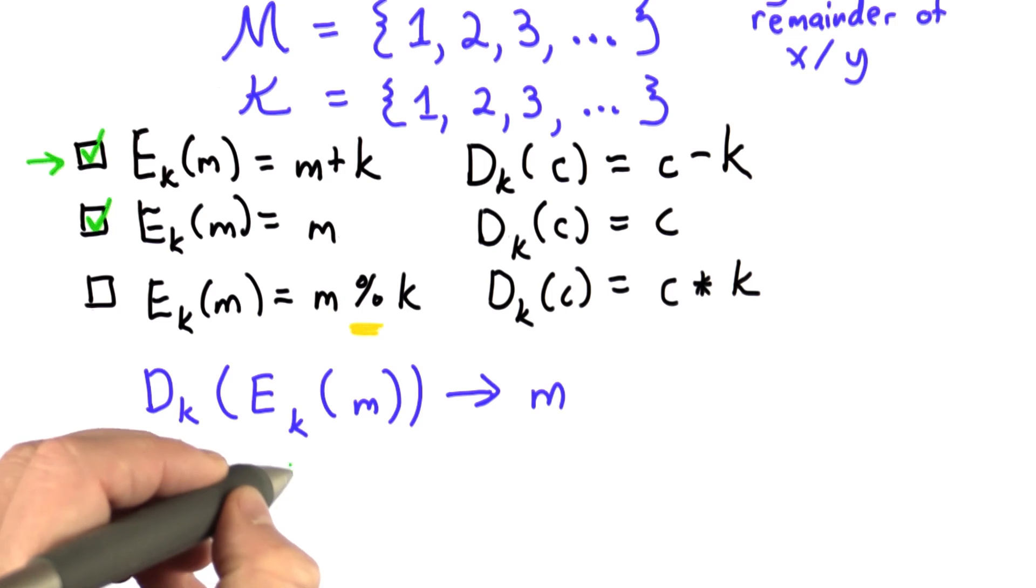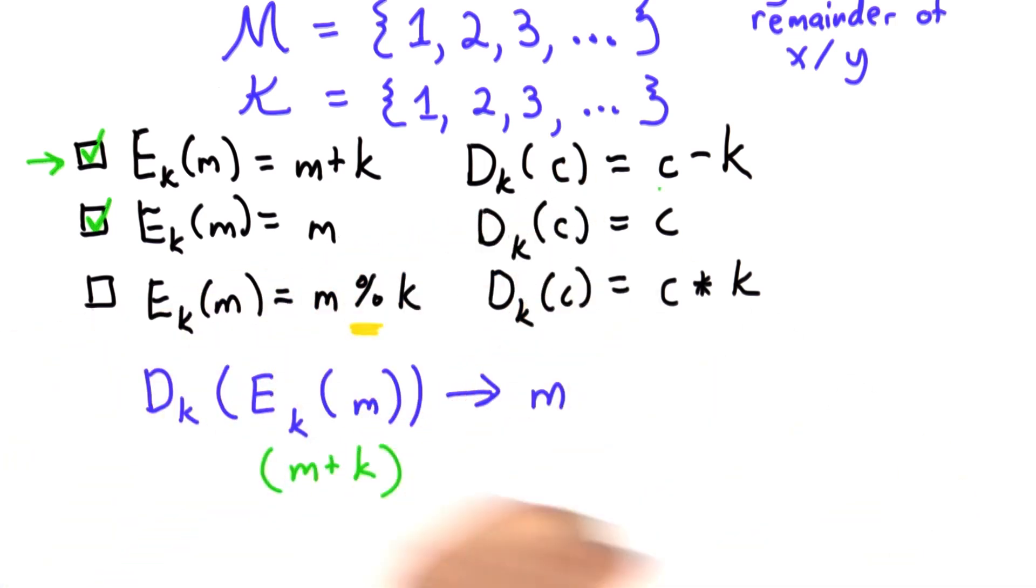The encryption function is m plus k. The decryption function takes that input, which is now called c, and subtracts k from it. Using the properties of arithmetic, this is indeed equal to m.